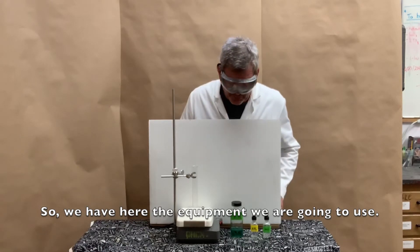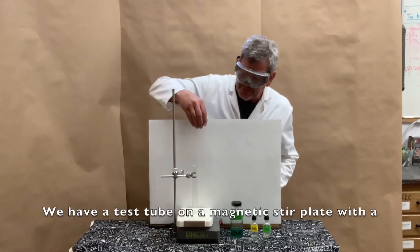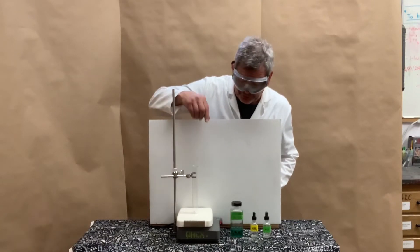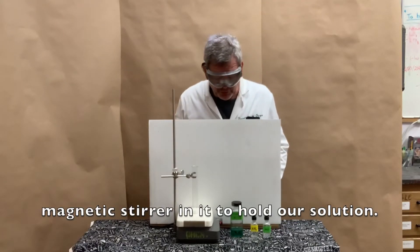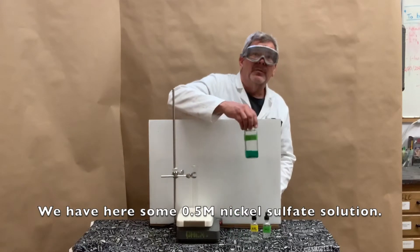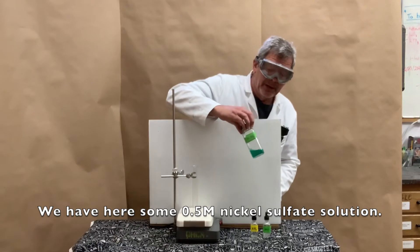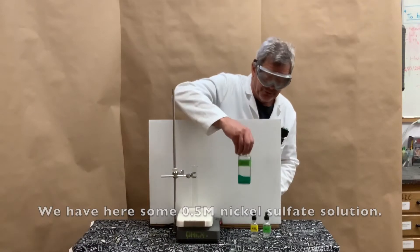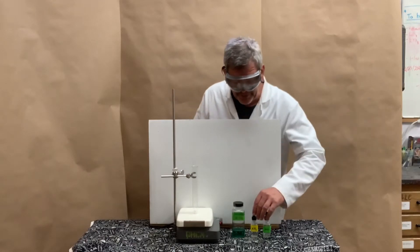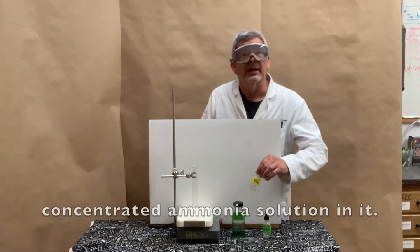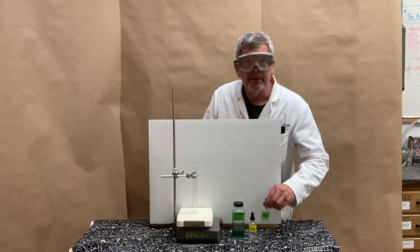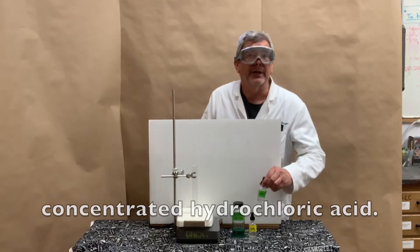So, we have here the equipment we're going to use. We have a test tube on a magnetic stir plate with a magnetic stirrer in it to hold our solution. We have some 0.5 molar nickel sulfate solution, a dropper bottle with concentrated ammonia solution, and a dropper bottle of concentrated hydrochloric acid.